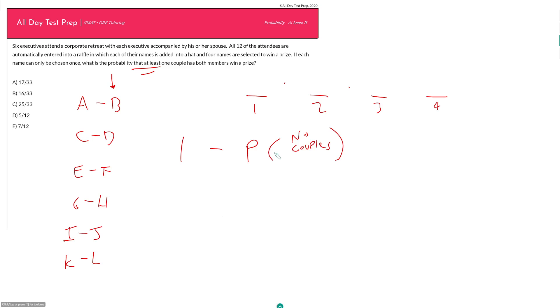So if we want to find this, we need to find the probability that we select no couples. That is not our answer, though. We're going to remember to do one minus this. And you could almost always expect that one of the trap answers would be if you had just selected this here. So don't do that.